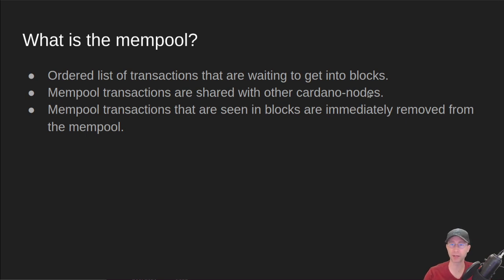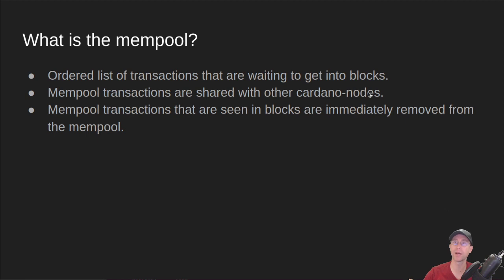Whenever a new block arrives, the node looks at all the transactions in the block, and any that are in the block — meaning they made it to the blockchain — are immediately removed from that local node's mempool. Most of the time this is fine. But sometimes a block gets rolled back. A block arrives at your node, you remove the transactions from the mempool, and then suddenly another block arrives that conflicts with it, or has a longer chain, or has a lower VRF hash, and that block wins. Maybe the transactions in that new block are not the same as the ones in the previous block, so a transaction in your mempool that got removed hadn't yet made it into this new block. This mini protocol helps us figure out what happened in those scenarios.